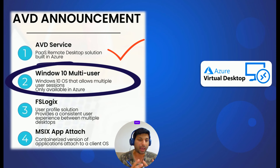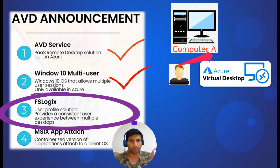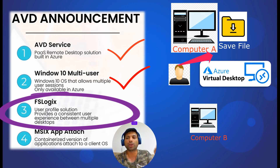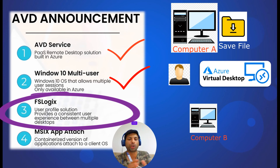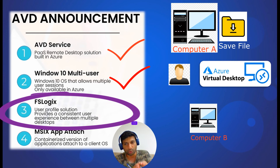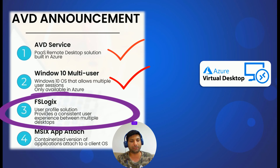The next product is FSLogix. One problem with a remote desktop environment is that a user could log into computer A and save something to that desktop, then the next day log into computer B and find the document they saved is no longer available. FSLogix makes user profiles portable — it follows them around as they move to different computers. FSLogix also saves user customizations like browser favorites and improves the user experience by providing a consistent environment. We will be configuring FSLogix in this tutorial series.